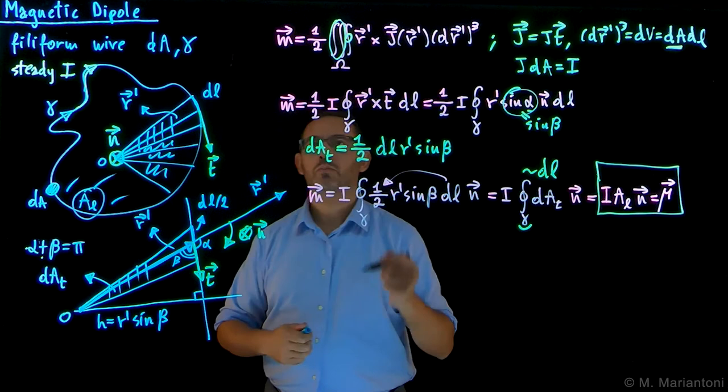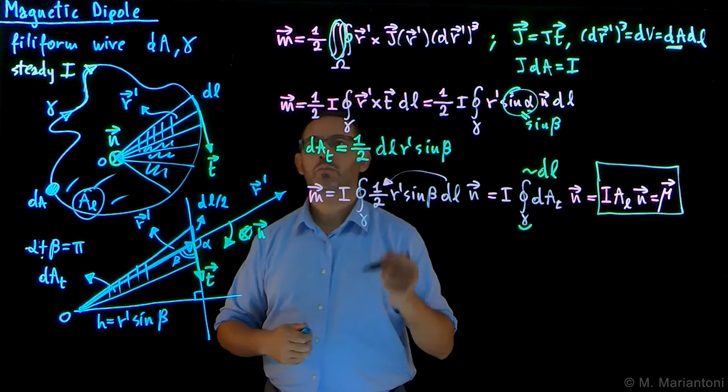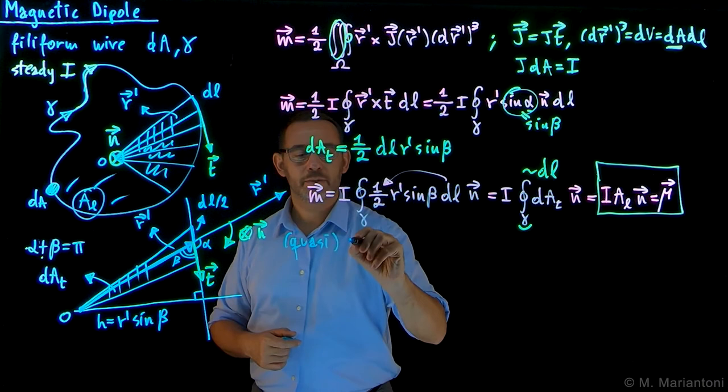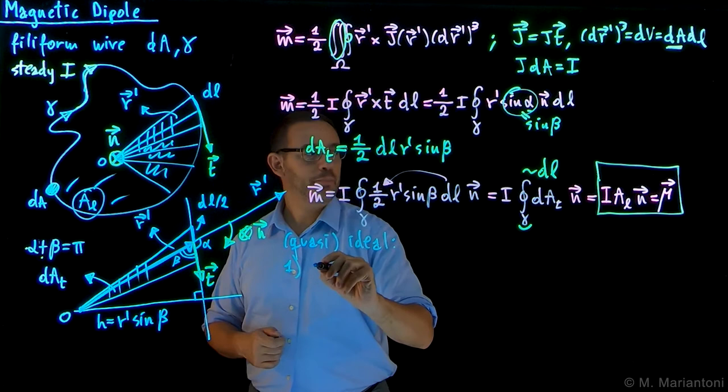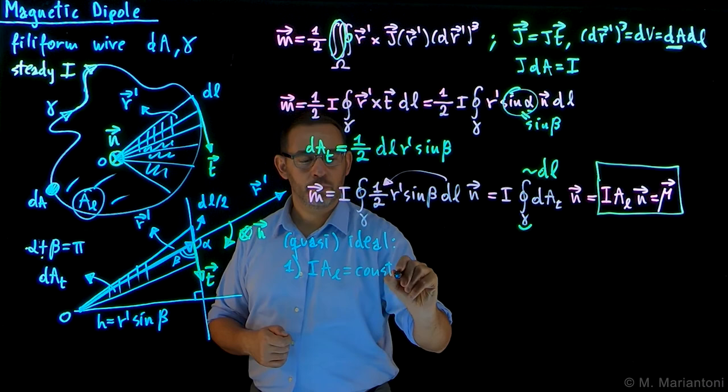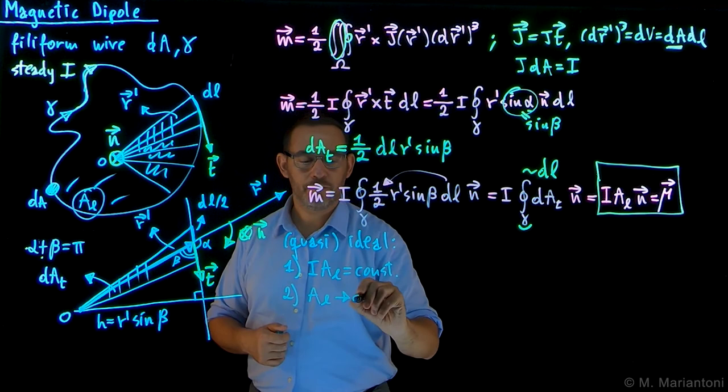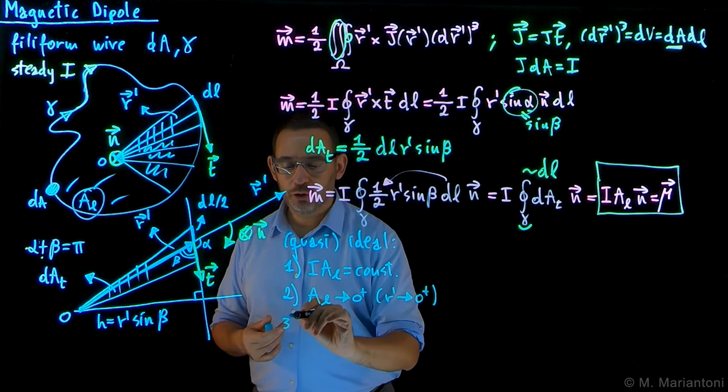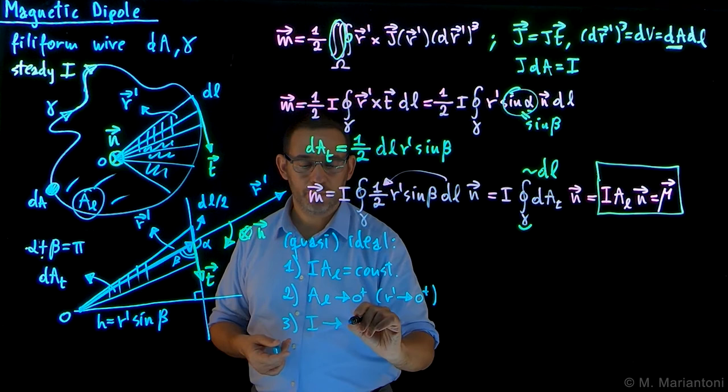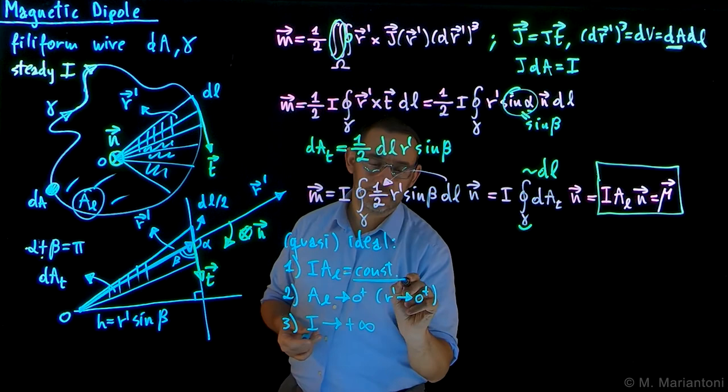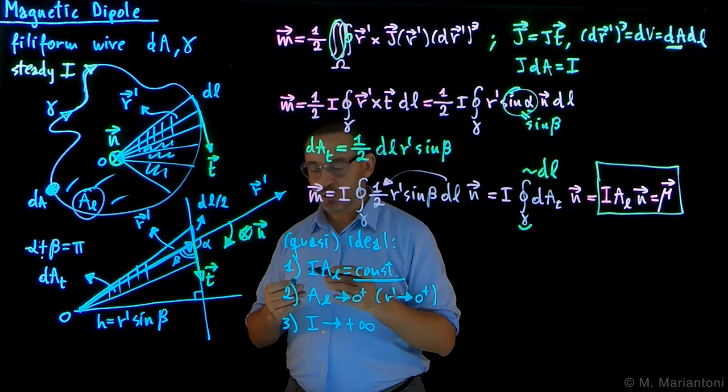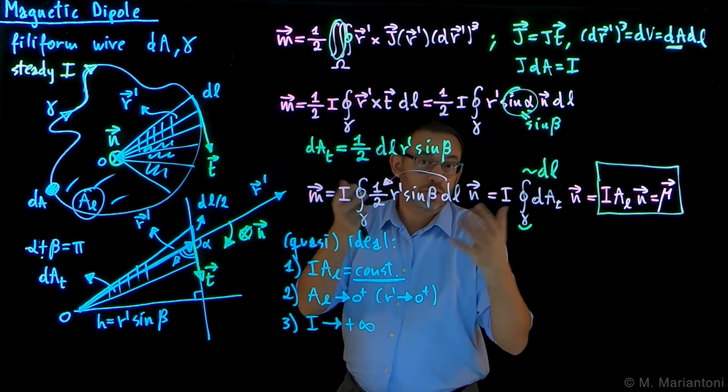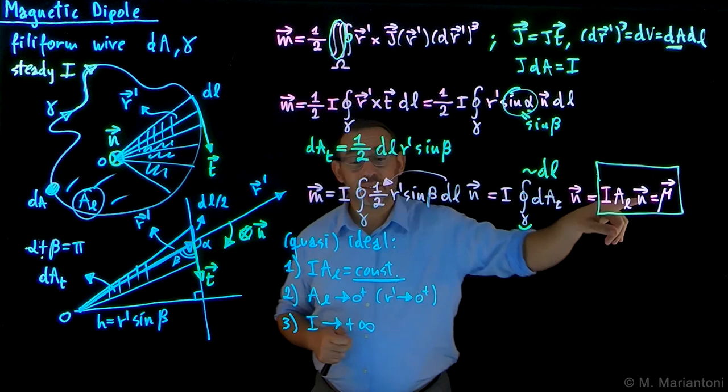Now, to make it ideal or quasi-ideal, we need to proceed, as always in physics, following this recipe. So first step, we want the product I times AL to be at all times constant. At the same time, I want to bring AL to zero plus, which effectively means that all the r primes go to zero plus. So this is the same thing we've done for the electric dipole. We brought the distance to be extremely small. So this is the geometrical part. The source, which in that case was the charge, now is the current. The current, we want to bring it at the same time to plus infinite, to make it larger and larger and larger, so that the product eventually remains constant. Of course, if I only do one of them, then it's either zero or infinite. And so this is the definition of ideal or quasi-ideal, if these are not exactly the limit, but they are just small and large, which is the case in magnetic materials, then it's called quasi-ideal magnetic dipole with dipole moment mu.